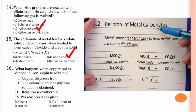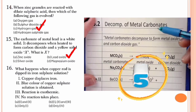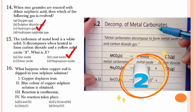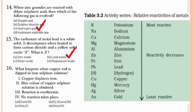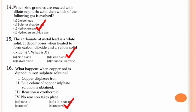Question number 16. What happens when a copper rod is dipped in iron sulphate solution? Options: copper displaces iron; blue colour of copper sulphate solution is obtained; reaction is exothermic; no reaction takes place. Recall the reactivity series — copper lies below iron, so copper is less reactive than iron. If the copper rod is placed in iron sulphate solution, nothing will happen because copper cannot displace iron. The correct option is option D, no reaction takes place.